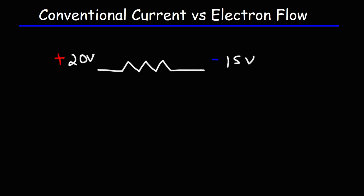In what direction will electricity flow in this resistor? Well, according to conventional current, current is going to flow from a region of high potential to a region of low electric potential. So conventional current is going to flow from positive 20 to negative 15 in this example.